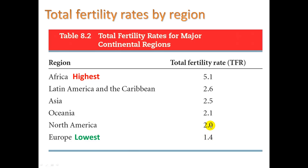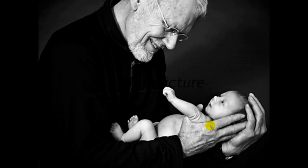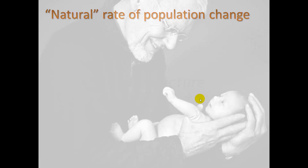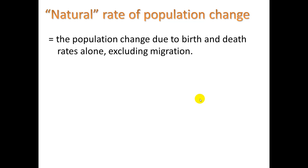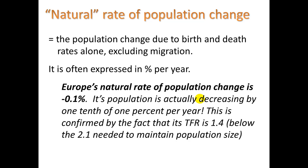Even North America — being Canada and the US — is less than the replacement fertility rate of 2.1. Europe's natural rate of population change is negative 0.1%, meaning its population is actually decreasing by one-tenth of 1% per year. This is confirmed by the fact that its TFR is 1.4, below the 2.1 needed to maintain population size.